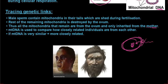mtDNA is used to compare how closely related individuals are to each other. If the mtDNA is very similar, it means you are more closely related. So you and your siblings — whether brother or sister — all share the exact same mitochondrial DNA as your mother. And your mother shares the exact same mitochondrial DNA as her mother, her grandmother, and her great-grandmother.